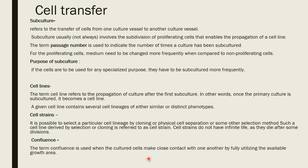Regarding cell strains: it is possible to select a particular cell lineage by cloning, physical cell separation, or some other selection method. The cell line derived by selection or cloning is referred to as a cell strain. Cell strains do not have infinite life because the cell line can die after some divisions, as they lose the capacity for cell renewal after some divisions.